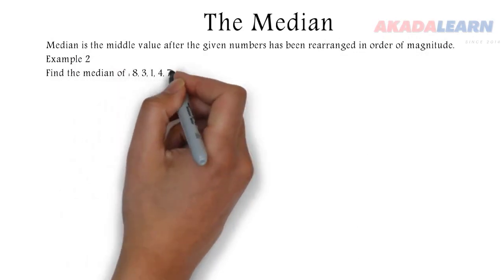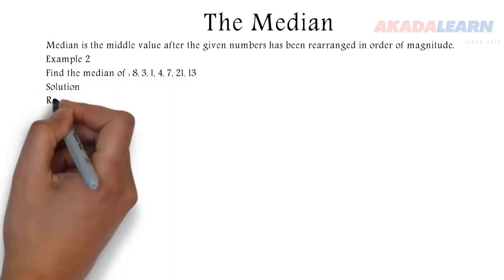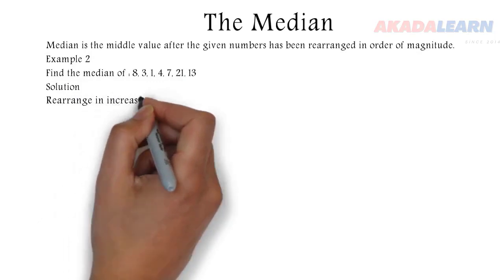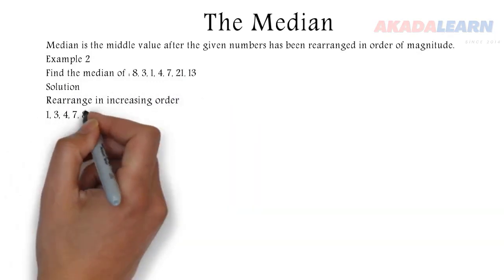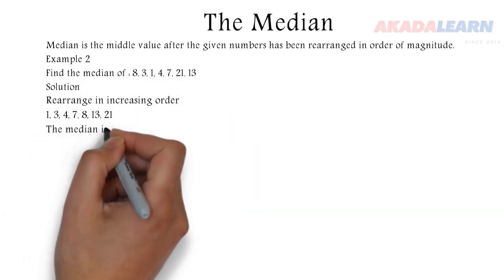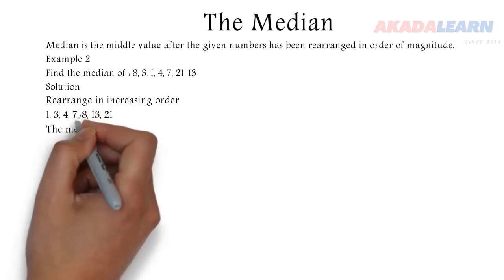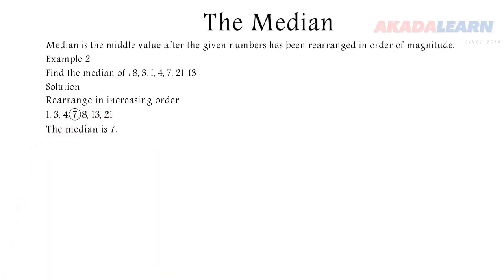From that example, we are going to first rearrange the numbers in increasing order: 1, 3, 4, 7, 8, 15, and 21, and we discover that our median is 7, the number at the middle.